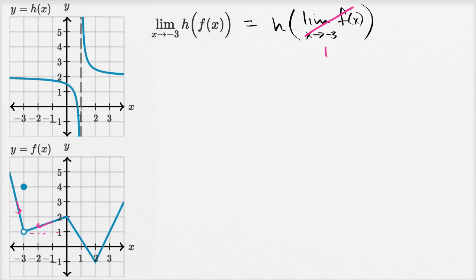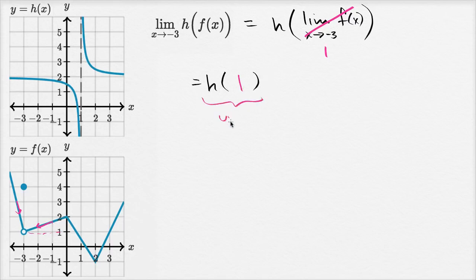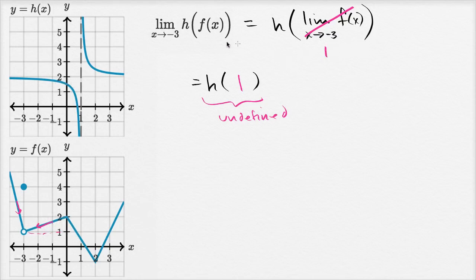So this is the same thing as h of one. We just have to evaluate h of one. But when we look at the graph at x equals one, this function does not look defined — h of one is actually undefined. So in this case, the limit would not exist. The limit of f of x was fairly straightforward, but when we tried to take that output and put it as an input into h of x, h wasn't defined there.